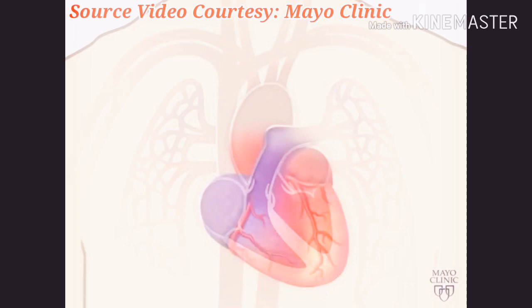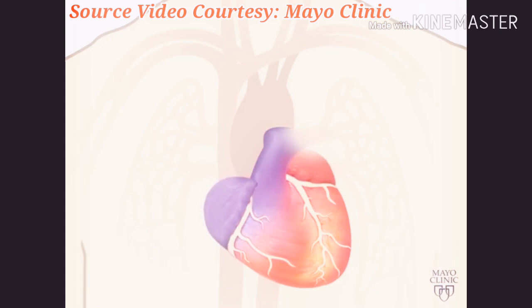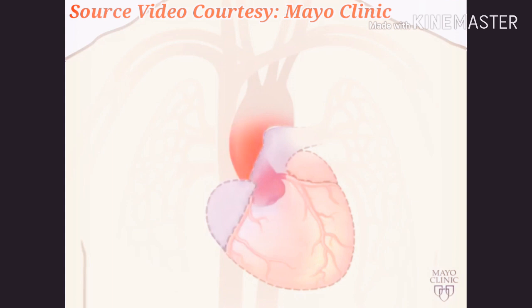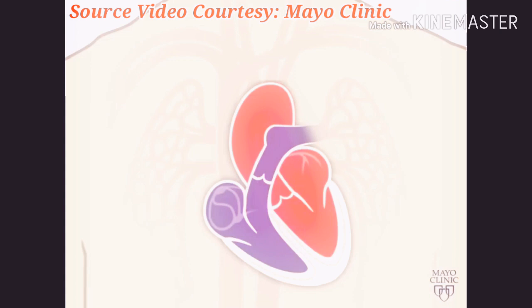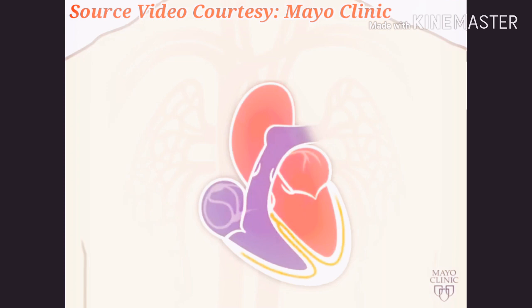Your heart is also nourished by blood. Blood vessels called coronary arteries extend over the surface of your heart and branch into smaller capillaries, feeding your heart with oxygen-rich blood. Your heart also has electrical wiring which keeps it beating. Electrical impulses begin high in the right atrium and travel through specialized pathways to the ventricles, delivering the signal to pump. This conduction system keeps your heart beating in a coordinated and normal rhythm.